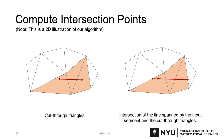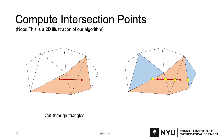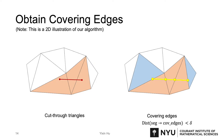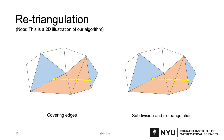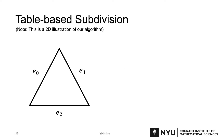Then we compute the intersection of the line spanned by the input segment and the cut-through triangles. The blue triangles are neighboring triangles that intersect with the spanned segment. The intersection segments are marked in yellow. We call these intersection segments covering edges, since the directed distance from any point on the input segment to the covering edges is smaller than a certain threshold delta. In this case, delta is the numerical precision of floating point numbers. For maintaining a valid triangle mesh, we need to subdivide and re-triangulate the affected triangles, marked in orange and blue. Knowing which edges have intersections uniquely defines the connectivity of new triangles.